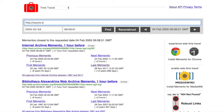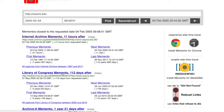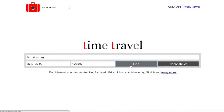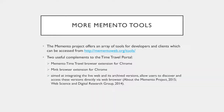Once either the Find or Reconstruct function is accessed, users can directly perform other queries by using the navigation panel on top of the page. The Time Travel Portal is a useful tool to easily search, access, and navigate archived web resources. The Memento project offers an array of tools for developers and clients which can be accessed from mementoweb.org/tools. Two useful complements to the Time Travel Portal are the Memento Time Travel and Link browser extensions for Chrome, which integrate the live web and its archived versions, allowing users to discover and access these versions directly via web browser.